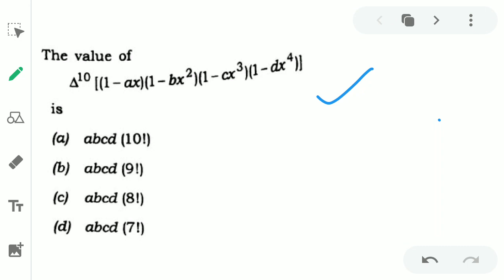So the question was you have to calculate the value of delta raise to power 10 and this polynomial function has been given that is (1-ax)(1-bx²)(1-bx³)(1-dx⁴).